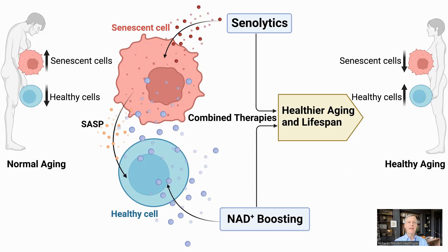For me, the take-home message is that I need to take a senolytic to reduce my senescent cells, an NAD booster to raise NAD, and also a CD38 inhibitor. At the moment, for me, these are fisetin, NMN, and apigenin, respectively.